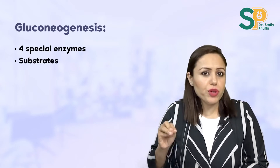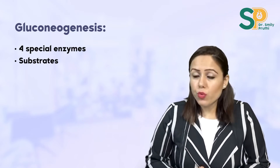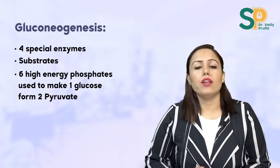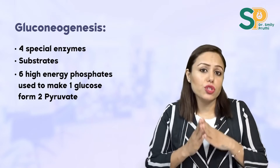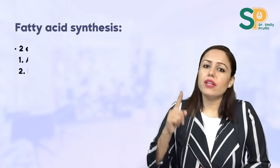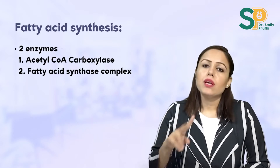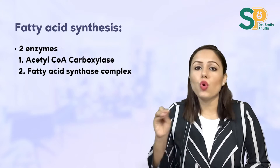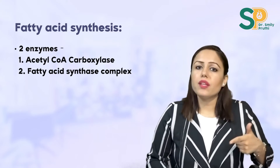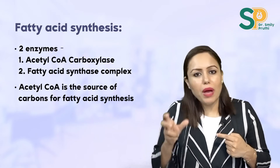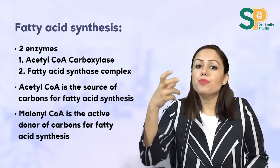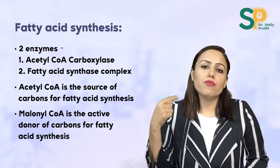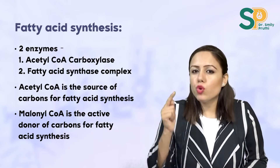Do all the substrates of gluconeogenesis — frequently asked. Six ATPs are used to make one glucose in gluconeogenesis — it is a high-energy-consuming pathway. Do the HMP shunt — very important; there is no net gain of ATP in the HMP shunt. In fatty acid synthesis, two key enzymes: acetyl-CoA carboxylase (rate-limiting) and the fatty acid synthase complex. The starting material is acetyl-CoA, which gets converted to malonyl-CoA — the active donor in fatty acid synthesis.